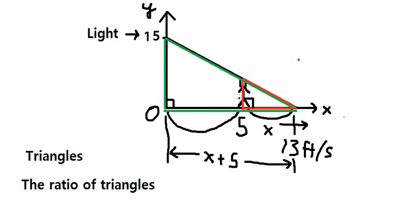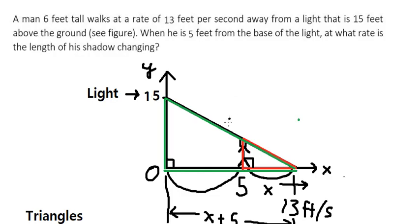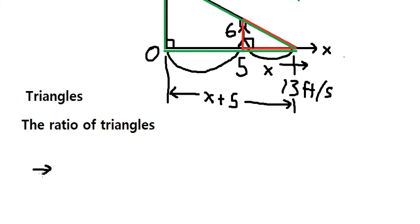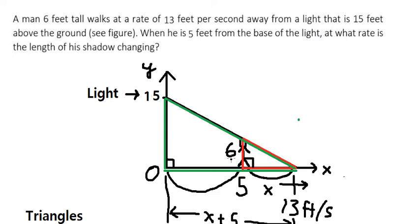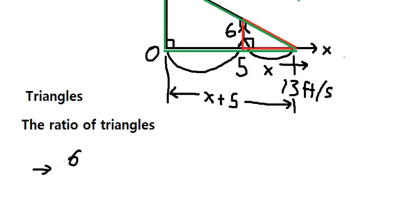The height of the man is 6 feet. The light is 15 feet. So we have the ratio: 6 over 15 equals S over S plus 5. So we can find the length of his shadow.